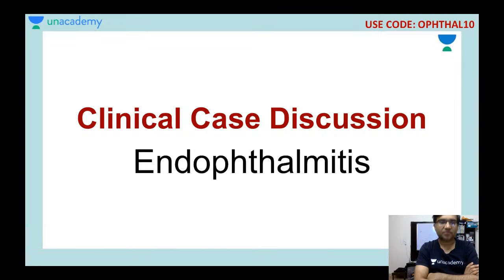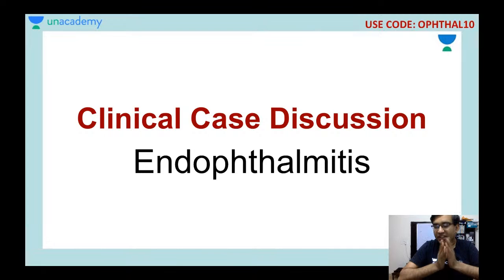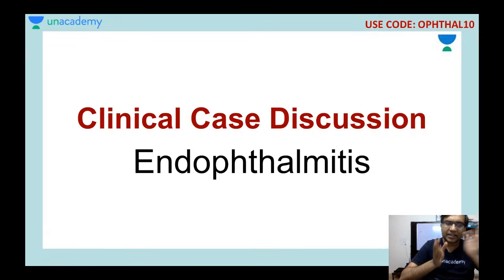The reason endophthalmitis is considered easier is that all the findings you get are just a combination of findings seen in a patient with a corneal ulcer or anterior uveitis. The only thing that can be asked more in your viva exam is regarding the management of the patient, and this is a very important topic for your NEET-PGA exam.